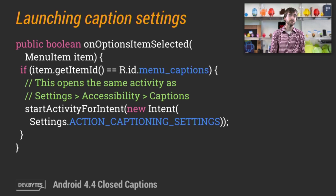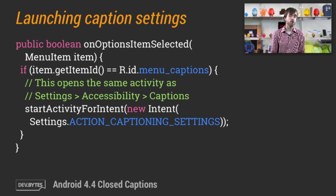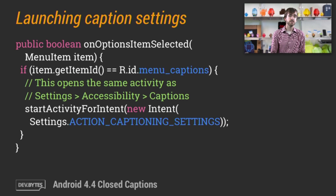First off, you may want to add a menu to your application that lets users quickly modify caption display preferences. Here's a sample implementation for OnOptionItemSelected that opens the System Caption Settings activity, which you can also reach by opening the Settings app and navigating to Accessibility and then Captions. There, you can toggle captions on and off and change rendering properties like font size, background color, and text color.